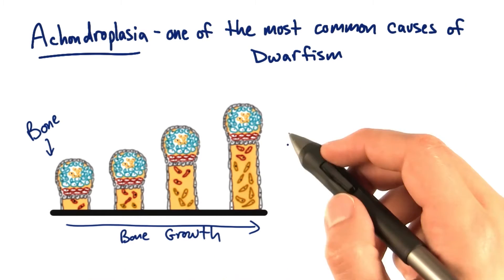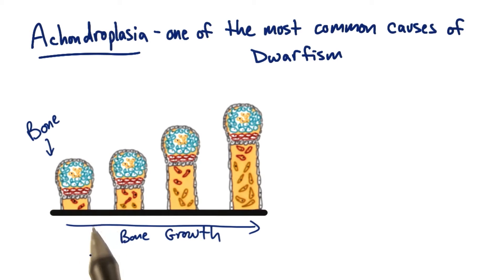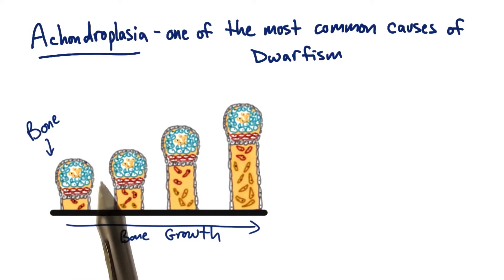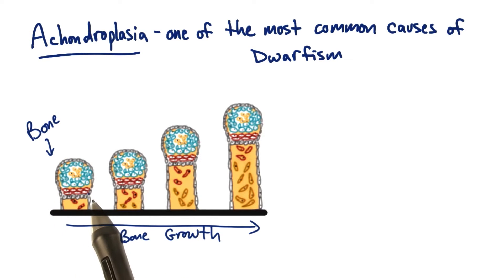This is what normal bone growth looks like. If we take a long bone from your body, the end of it has a particular kind of cell — here I'm outlining it in red —